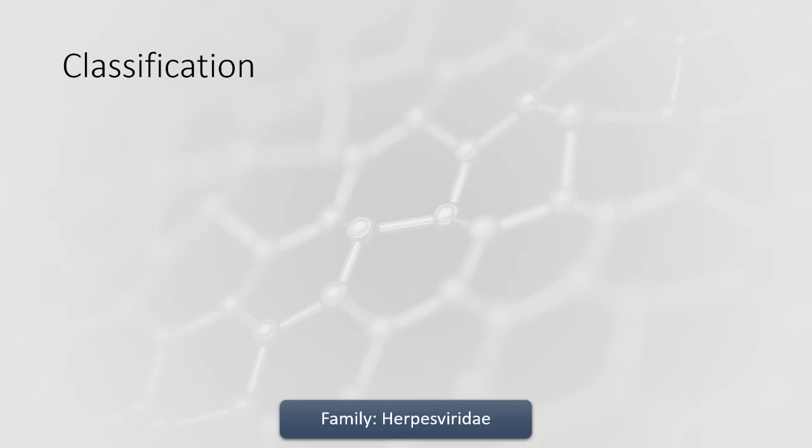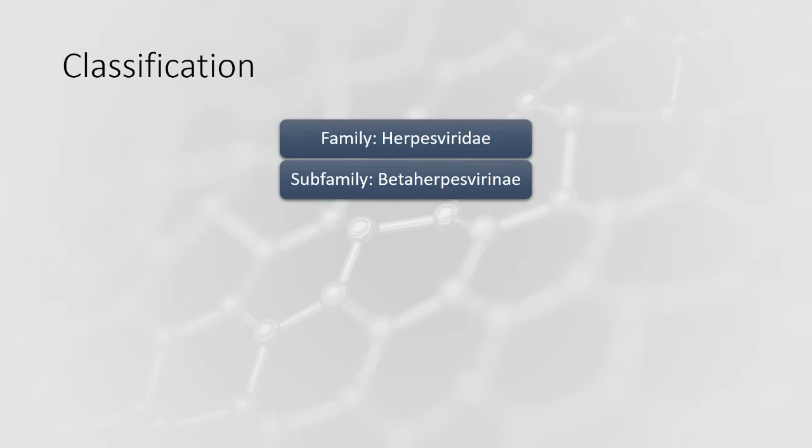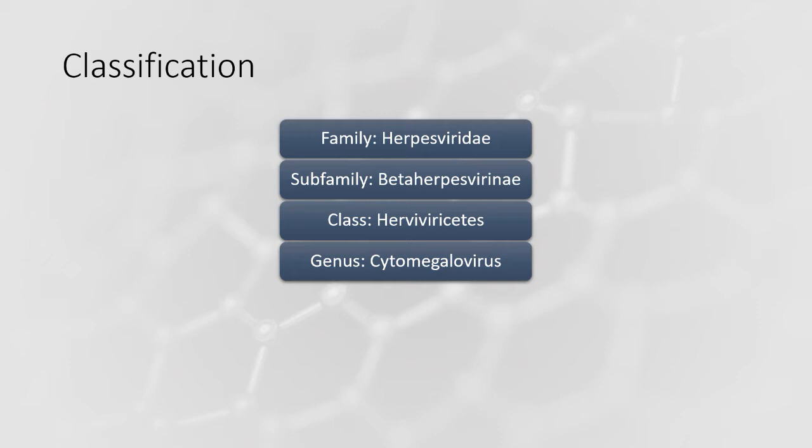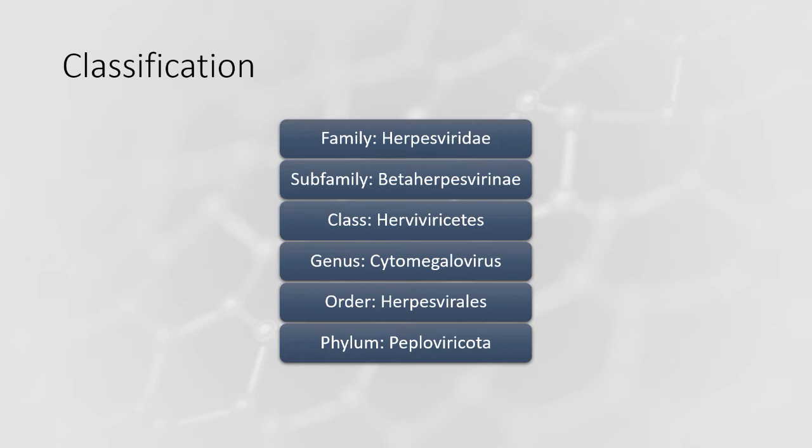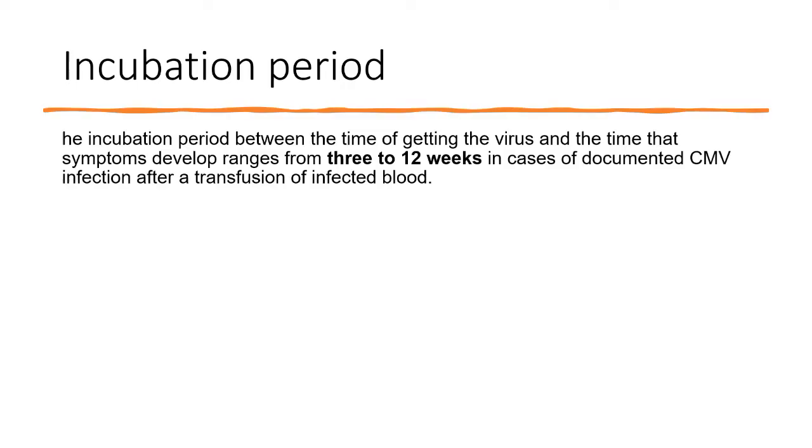The classification of cytomegalovirus: Family — Herpesviridae. Subfamily — Betaherpesvirinae. Class — Hervivirisates. Genus — Cytomegalovirus. Order — Herpesvirales. Phylum — Peploviricota. Kingdom is noted but you only need to know up to phylum.